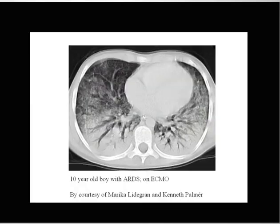In severe respiratory failure, here you have an example: a 10-year-old boy with severe acute respiratory failure. You can see the widespread distribution of densities — this is edema, consolidation, atelectasis — to the same extent as you can see in an adult ARDS patient, or even more. This will depend on how severe the disease per se is, but the child is far from protected from these consequences.